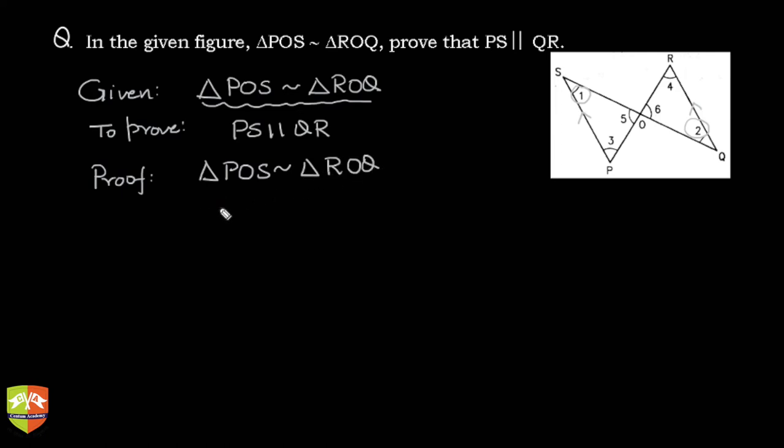Therefore, by the conditions of similar triangles, we can write that corresponding angles are equal.